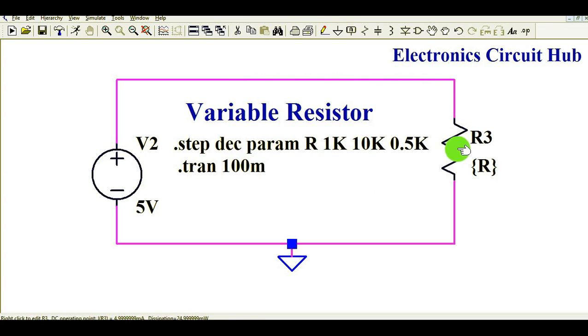And this resistance I defined as a variable resistance. That means if your resistance value is changing, so what will happen? Current flowing through this resistance will be changing. So I'm gonna show you about this.